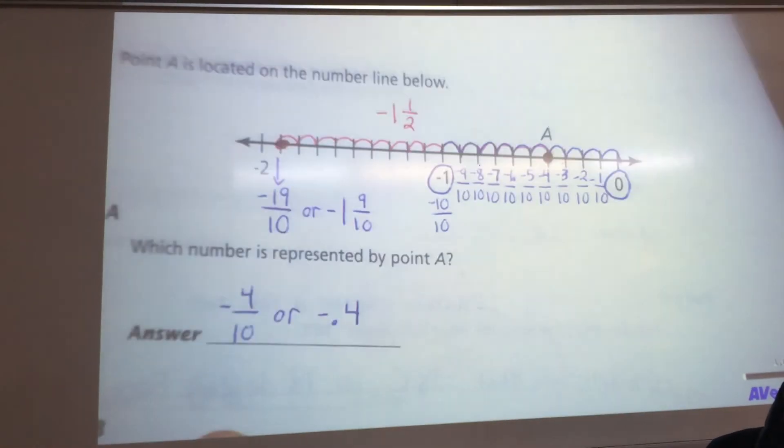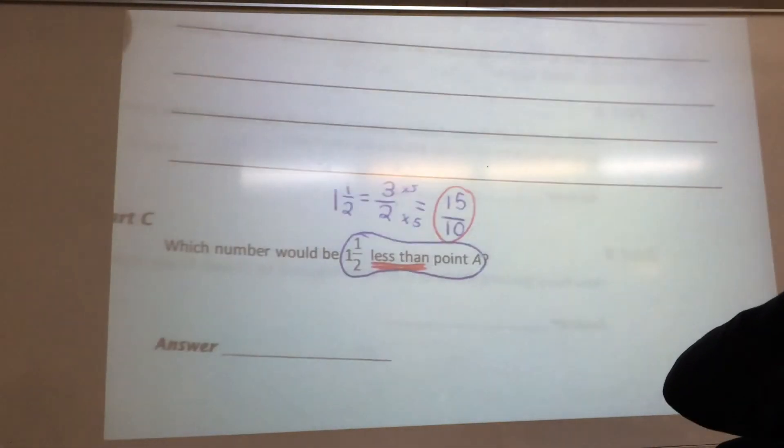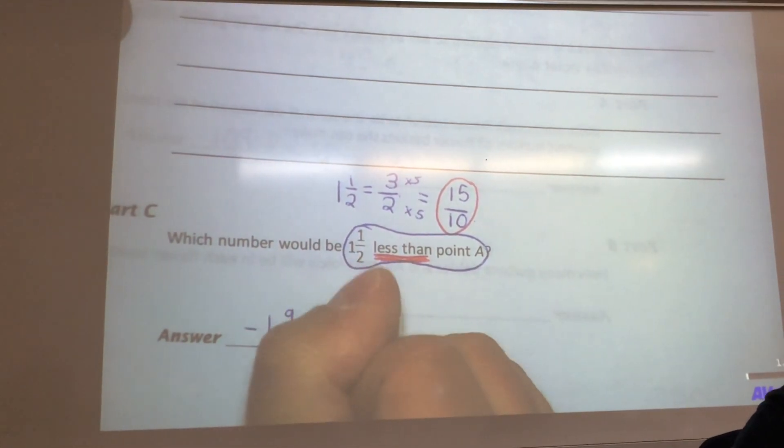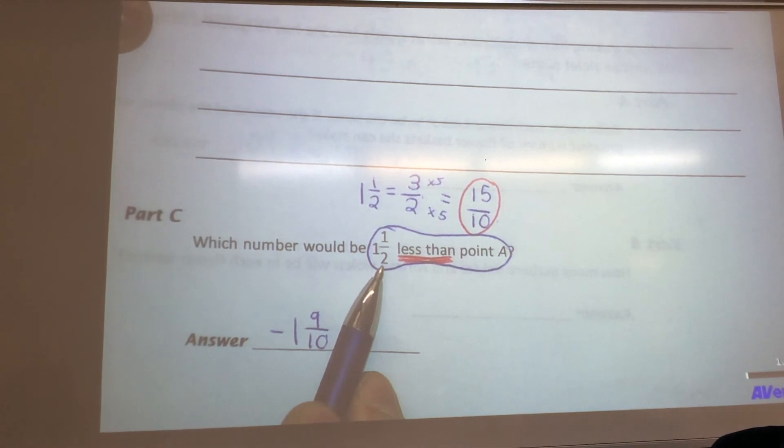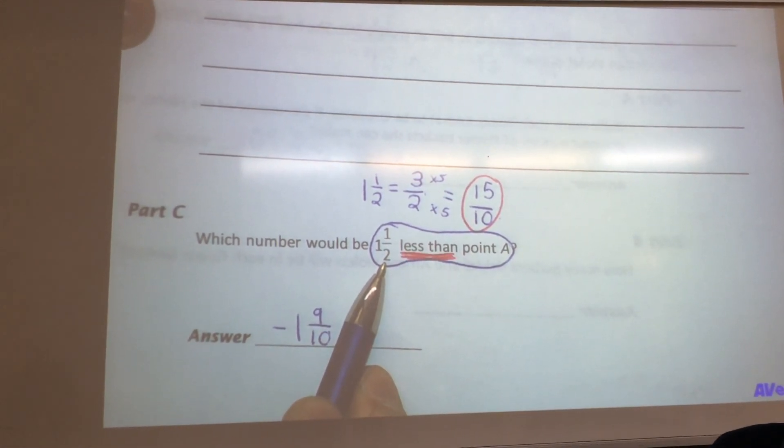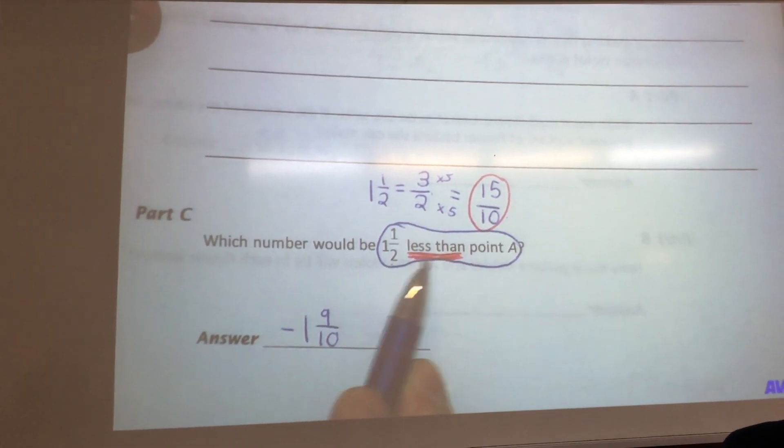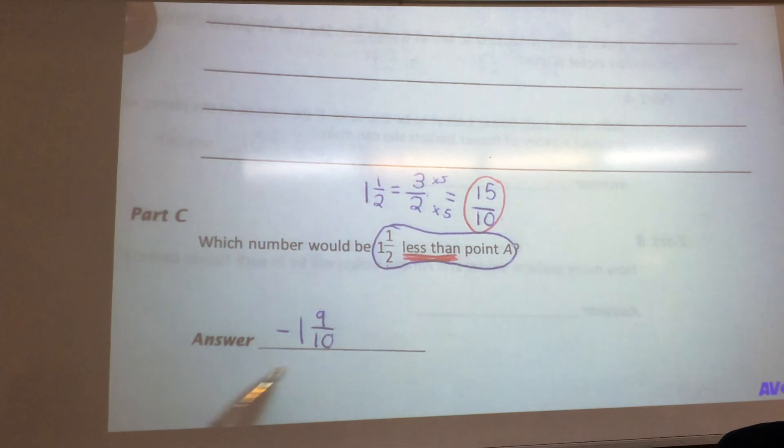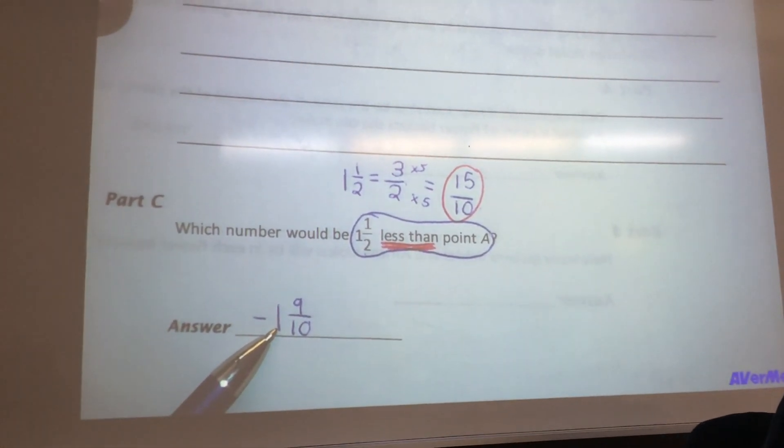So I'm going to move down again to put the correct answer down here. The answer is supposed to be negative 1 and 9 tenths. And one more time, the reason why this problem is tricky is because this does not speak the same language as the number line. So make it speak the same language. If it says less than, go to the left. If it said more than, go to the right. This is the correct answer and that's the only part that we're going to go over for this problem.